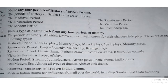Question: Name any four periods of the history of British drama. Answer: The periods are the Medieval period, the Renaissance period, the Restoration period, the Victorian period, the Modern period, and the Post-modern era. You have to write only four out of these six. State the type of drama for each period: Medieval period — didactic plays, mystery plays, miracle plays, cycle plays, morality plays. Renaissance period — tragedy, comedy, melancholy, revenge plays. Restoration period — heroic drama, pathetic drama, Restoration comedy. Victorian period — all types. Modern period — stream of consciousness, absurd play, poetic drama, radio drama. Post-modern period — almost all types, including kitchen sink drama.